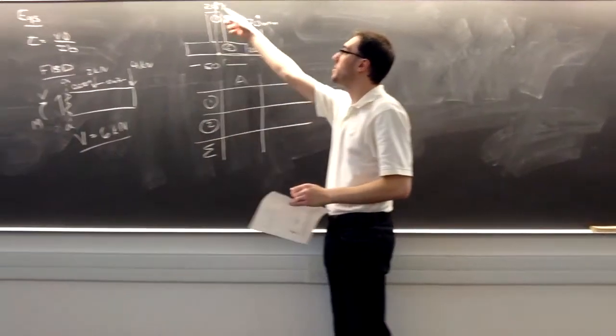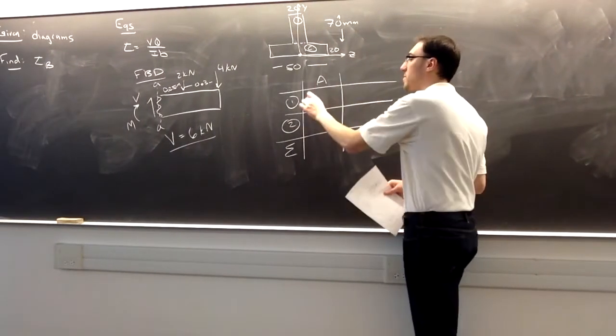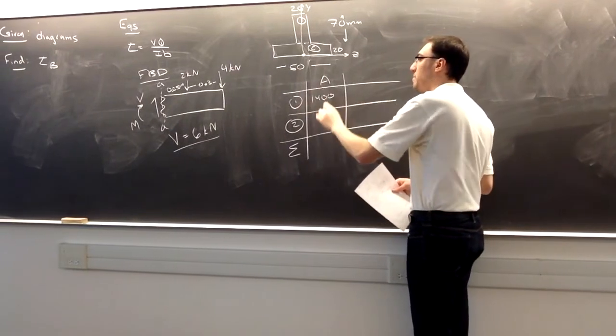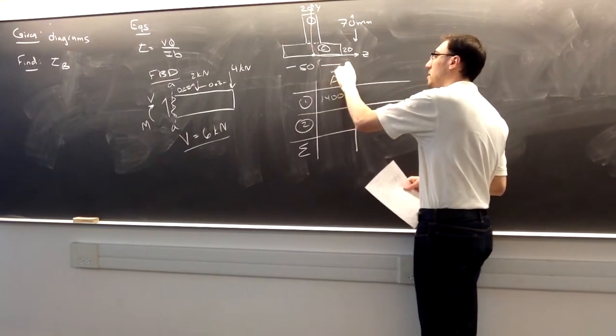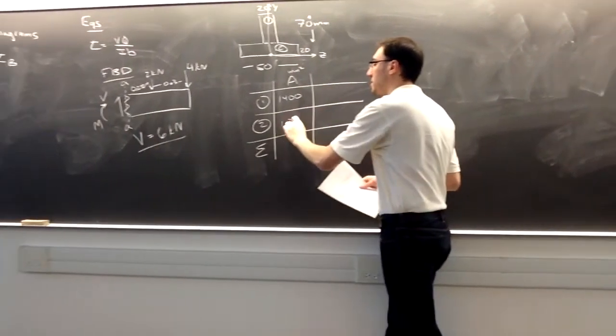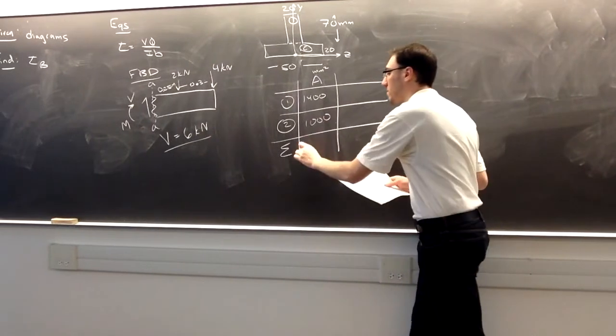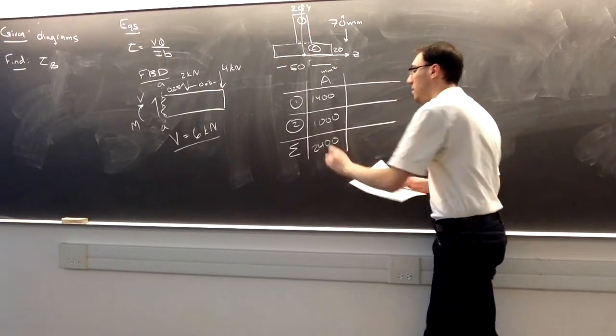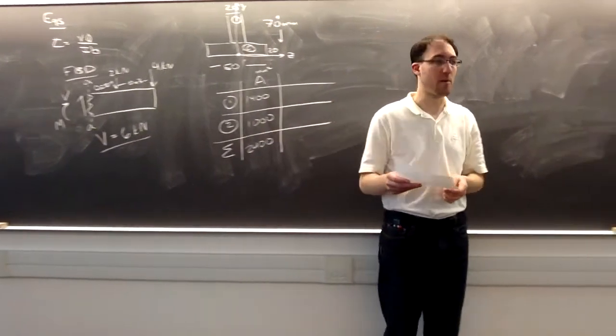Shape number one is 20 millimeters by 70 millimeters. So 1,400 millimeters squared is its area. And shape two is 20 by 50, 1,000 square millimeters. For a total of 2,400 square millimeters.